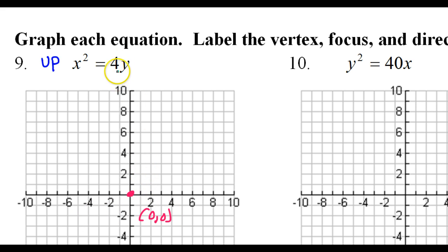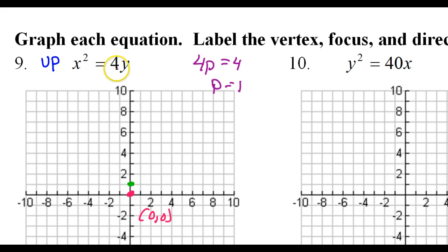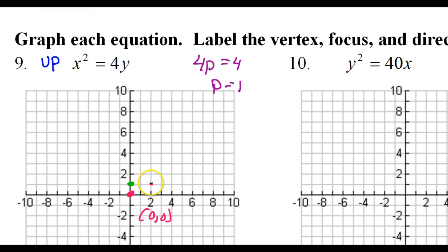Now let's find the p value. We know that 4p equals this number right here — it equals 4. That means dividing both sides by 4, we have p is equal to 1. That means we should be able to go up 1 and find the focus. And 4 is also the focal width, so I should be able to go 2 to the right and 2 to the left.